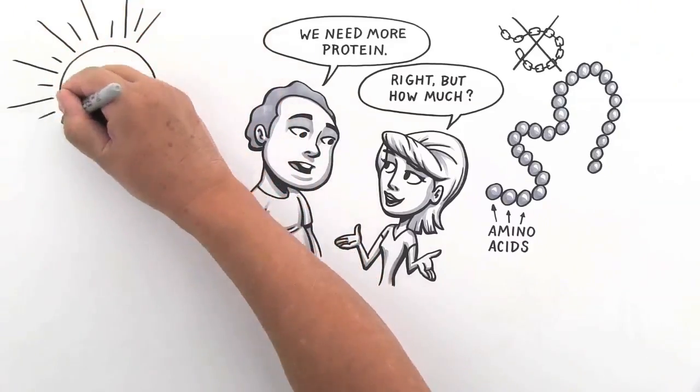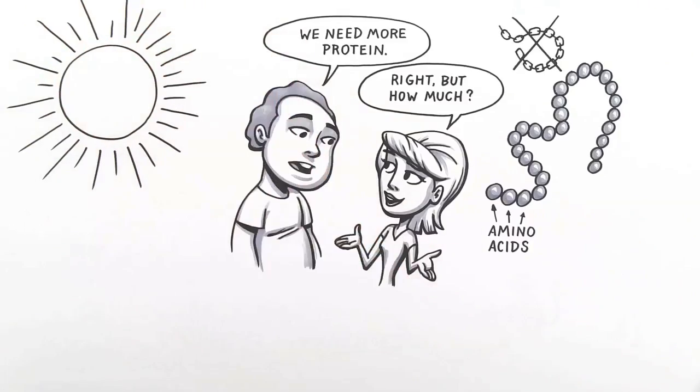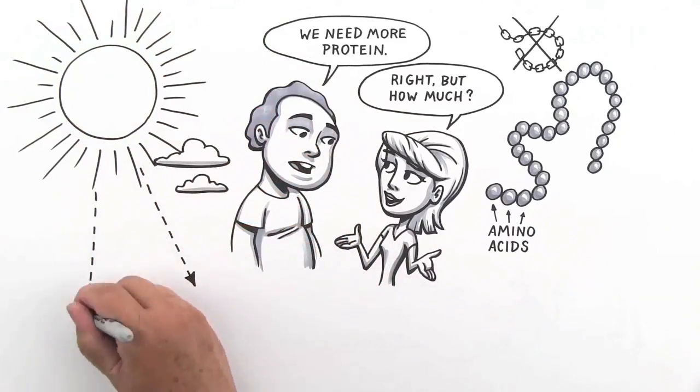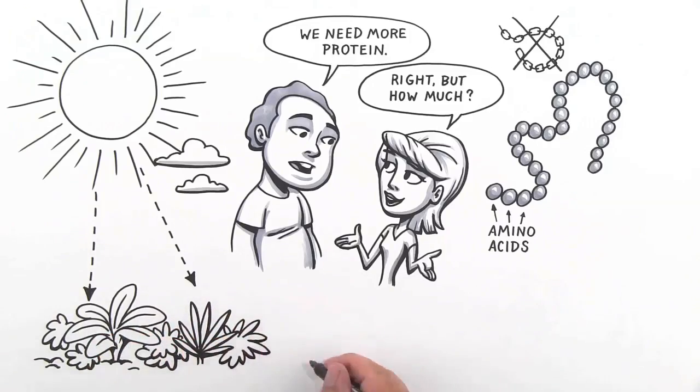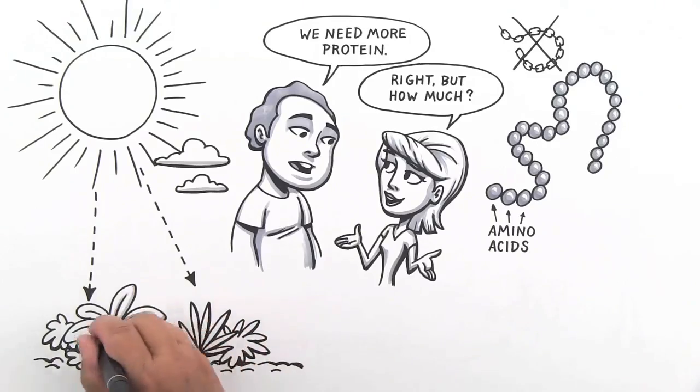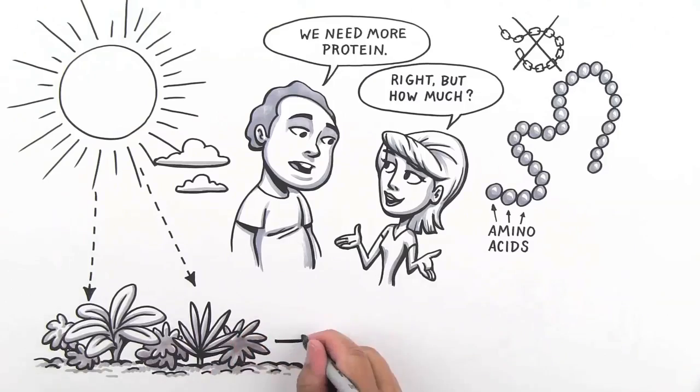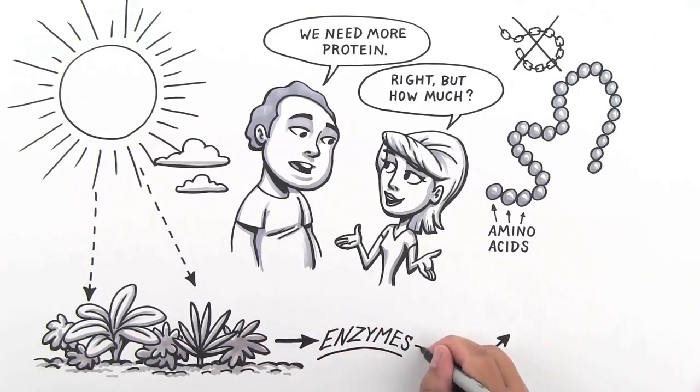The truth is all energy originally comes from the sun. Plants capture the energy of sunlight, combining it with carbon from the air and hydrogen, oxygen, minerals, and nitrogen pulled from the soil to make all kinds of interesting things like carbohydrates for structure and fuel, antioxidants to protect them from damage, and protein for strength and to make enzymes.